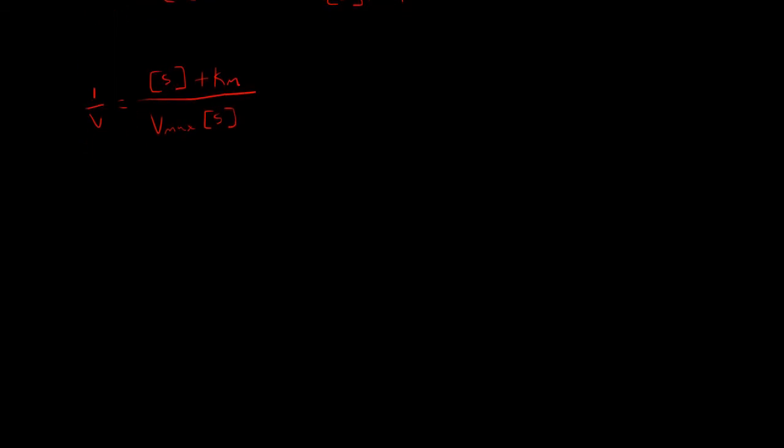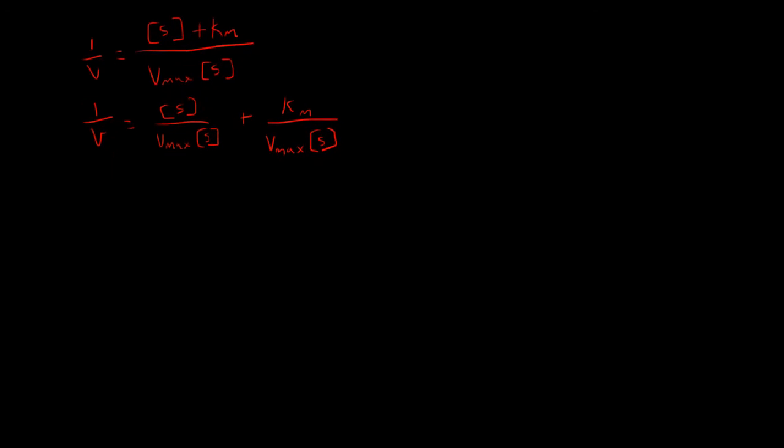And from here, we can separate this out. And we can actually, it seems like we're going to make it look a little more complicated, but in the end, it'll be in a format that's much easier to digest. So if we separate out the numerator, we get an equation that looks like this, Km over Vmax here.